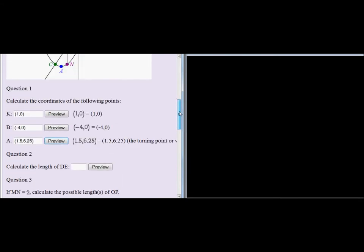For question 2, they ask us to calculate the length of DE. D is the y-intercept of the parabola and E is the y-intercept of the straight line.